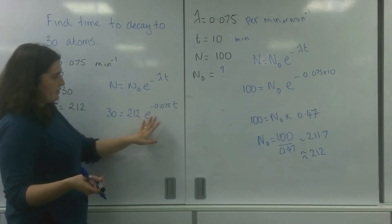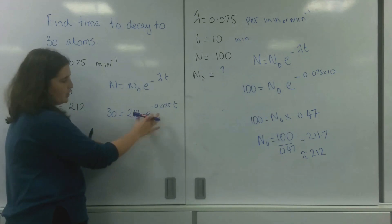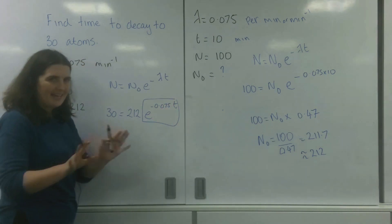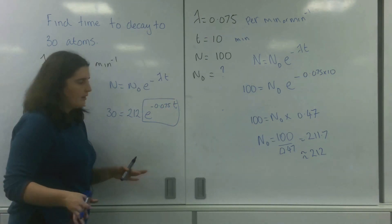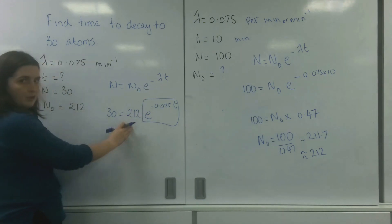So how do you get rid of this logarithm here? Now the first thing you have to do, this exponential function, is you need to get it on its own. So this bit here needs to be on its own before we do anything really strange to it. So I've got 212 times for this, so I need to get rid of this 212.